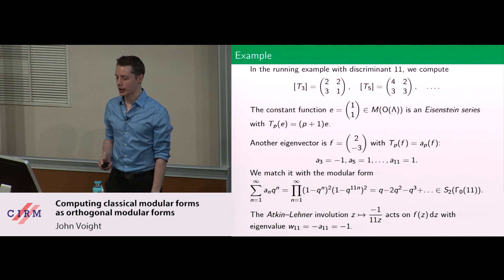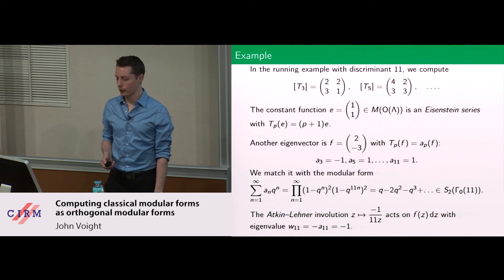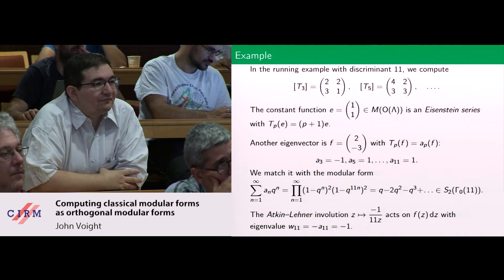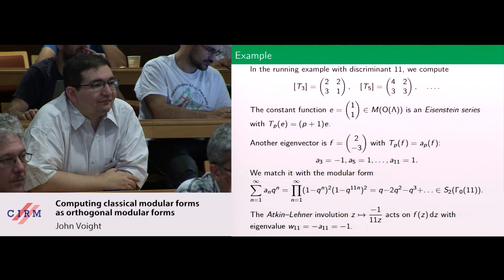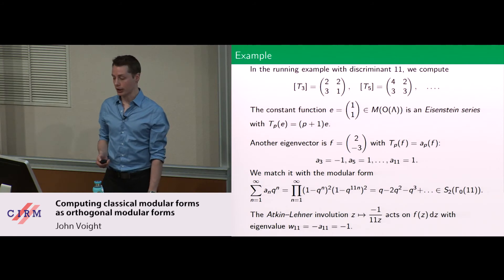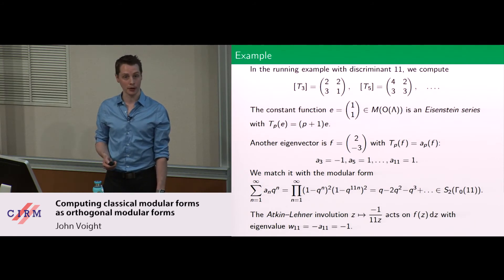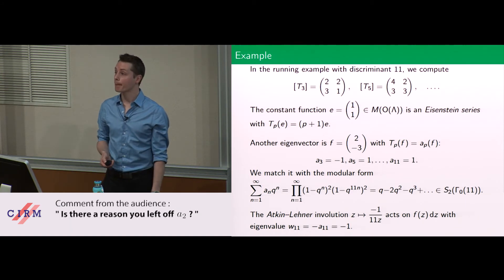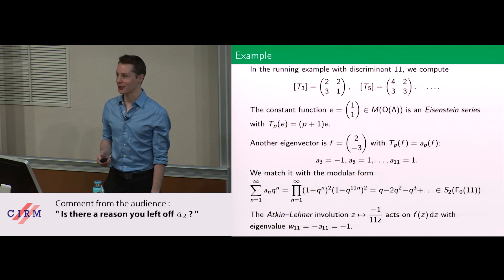There's one other piece of information that plays an important role: the Atkin-Lehner involution, z goes to minus 1 over 11z. If you consider the f written down as a function on the upper half plane, when you apply this involution you get eigenvalue minus 1. When the prime exactly divides the level, the Atkin-Lehner is the negative of the Hecke eigenvalue — that doesn't hold when p^2 divides the level, but here the relationship to a_11 is the negative.